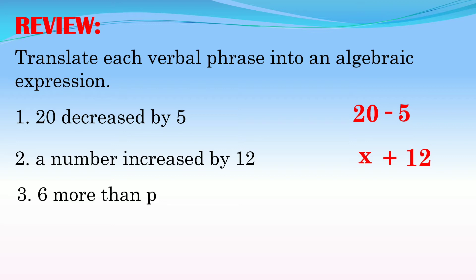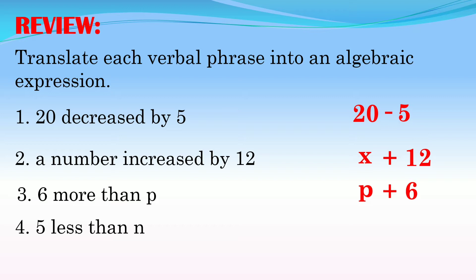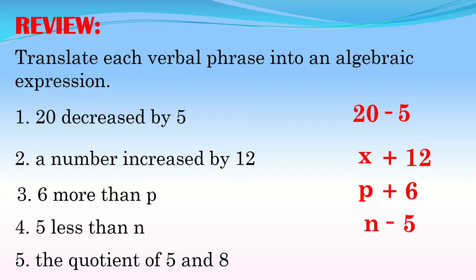Number 3: '6 more than p.' The keyword is 'more than' — note it is not 6 plus p but rather p plus 6. Number 4: '5 less than n.' It is not 5 minus n but n minus 5 — the keyword 'less than' means subtraction, so n minus 5. Number 5: 'the quotient of 5 and 8.' Quotient means divide, so the answer is 5 over 8. So you should now be familiar with these keywords and how to translate verbal phrases into algebraic expressions, which will help us solve problems involving simplifying rational algebraic expressions.